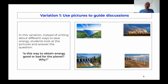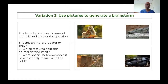For a variation, you can use pictures to guide discussion. Instead of writing about different ways to save energy, students look at pictures and answer the question: is this way to obtain energy good or bad for the planet and why? They write their answer on the poster next to the picture. In a second variation, students look at pictures of animals and answer: is this animal a predator or prey? Which features help this animal defend itself? What special behaviors does it have to help it survive in the wild? Students talk about animals and indirectly discuss adaptations, possibly before even knowing what adaptations are.